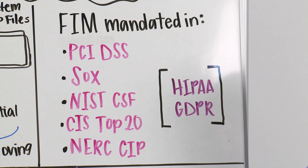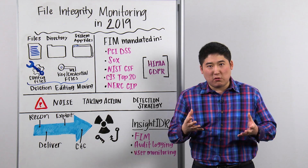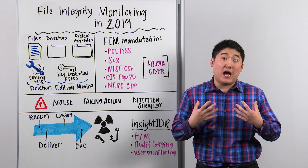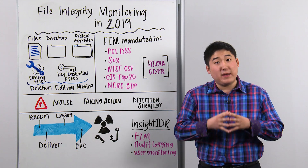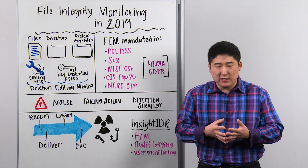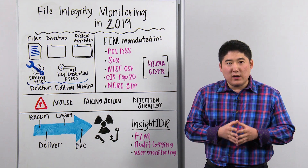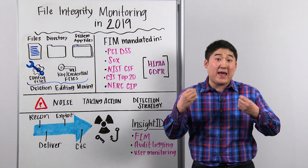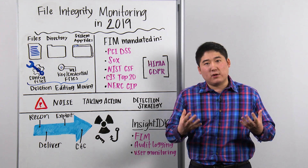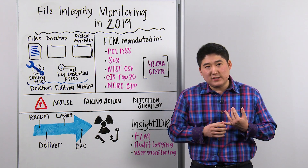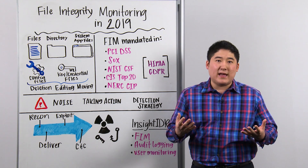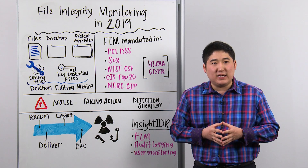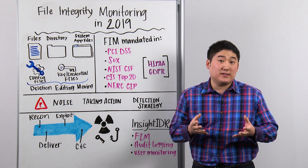For these compliance frameworks — the five here — there are explicit recommendations to deploy FIM and report on the status of FIM in your organization. For HIPAA and GDPR, they don't explicitly demand FIM, but it certainly helps during compliance audits, and there is language around having that type of visibility into your assets.